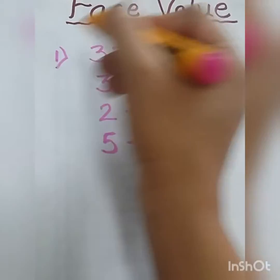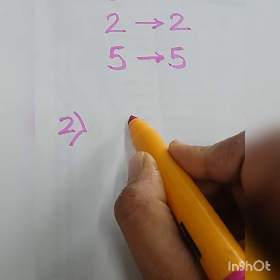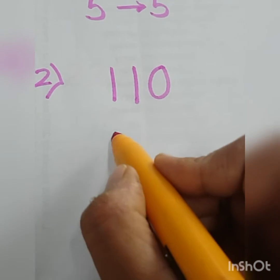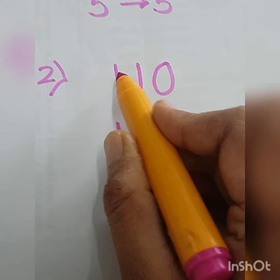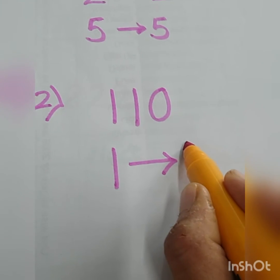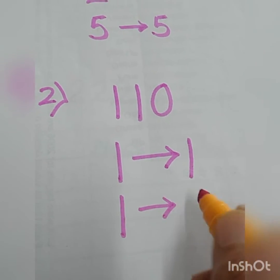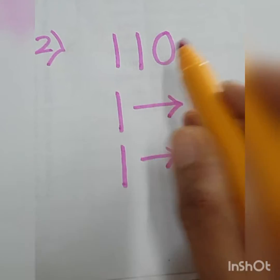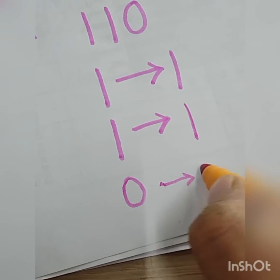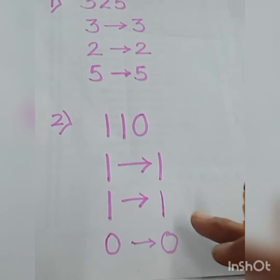Let me take one more example. I am writing number 110. I want to write the face value of the first 1 — face value is the number itself, so it is 1. For the second 1, the face value is also 1 — the number itself. And for 0, the face value is again the number itself, so it is 0. This is about the face value of the given number.